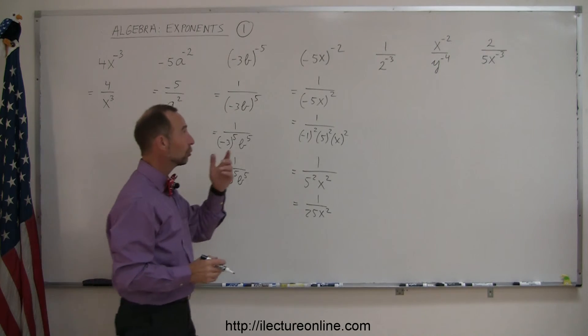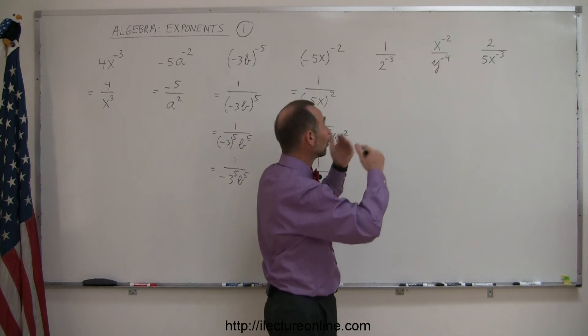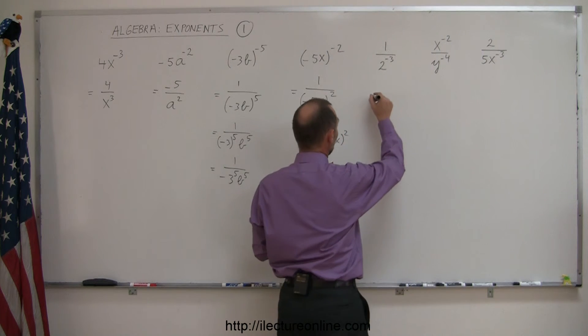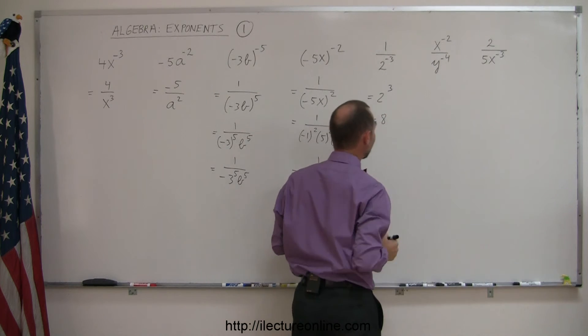Moving on to the next one, here we have 2 to the minus 3 power in the denominator. Just as we saw before, we can move that to the numerator, turn it into a positive exponent, so this is equal to 2 to the positive 3 power, or 2 to the positive 3 power is simply 8.